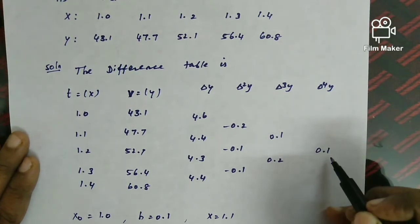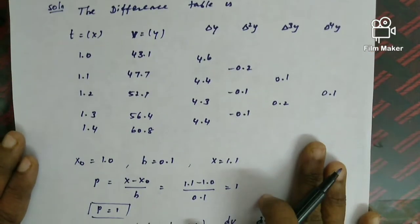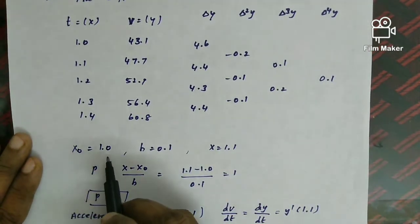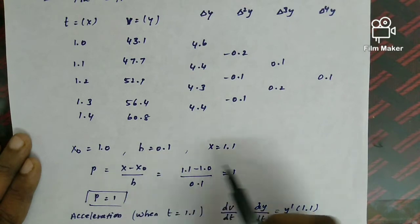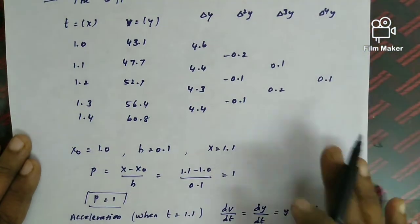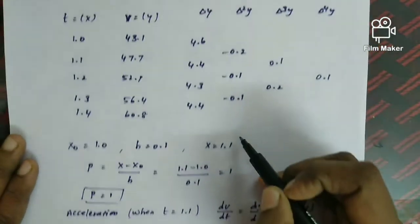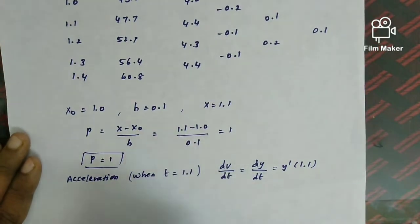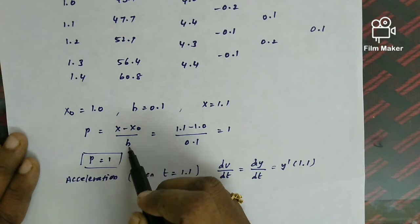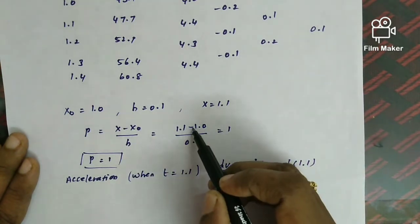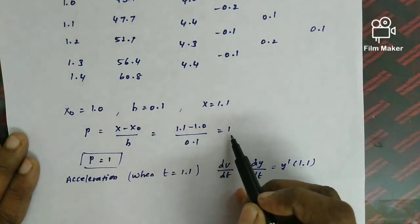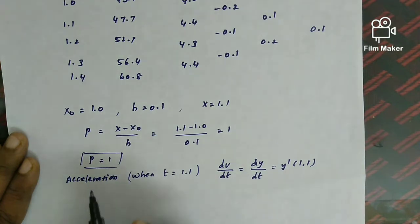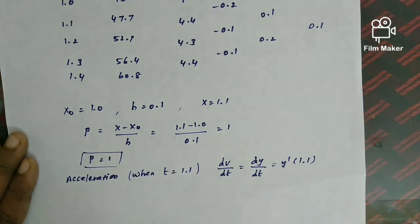From the given data, x₀ = 1.0 and h = 0.1. We need acceleration at t = 1.1, so x = 1.1. P = (x − x₀)/h = (1.1 − 1.0)/0.1 = 1. Wait — P = 1, not 0, so we use the general first formula. Acceleration is dv/dt — differentiating velocity gives acceleration.